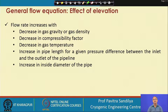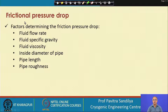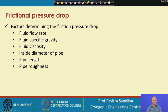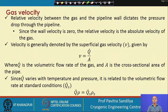The frictional pressure drop depends on the fluid flow rate, the specific gravity of the fluid, the fluid viscosity, the inside diameter of the pipe, the pipe length, and the pipe roughness. These are the common factors that determine pressure drop through a pipeline. To characterize the flow we first need to know the gas velocity, since it is related to the flow rate and determines the flow regime — whether laminar, turbulent, or transitional — through the Reynolds number.